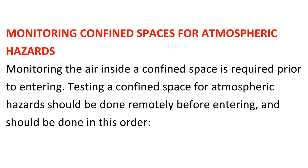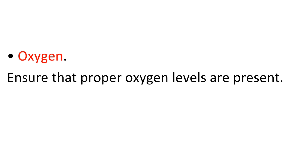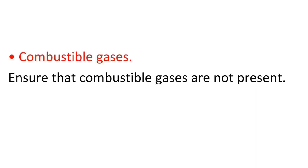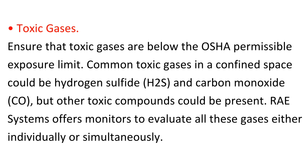Monitoring confined spaces for atmospheric hazards: monitoring the air inside a confined space is required prior to entering. Testing a confined space for atmospheric hazards should be done remotely before entering, and should be done in this order: first, oxygen — ensure that proper oxygen levels are present; second, combustible gases — ensure that combustible gases are not present; third, toxic gases — ensure that toxic gases are below the OSHA permissible exposure limit.